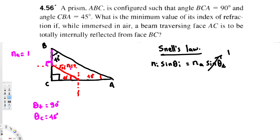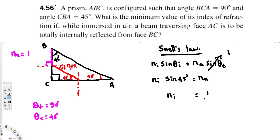Since sin(90°) = 1, that term drops out. The incident angle is 45 degrees, so: n_i × sin(45°) = n_a × 1. Bringing terms across: n_i = n_a / sin(45°) = 1 / (1/√2) = √2. So the index of refraction of the prism is √2, which equals approximately 1.41. That's our final answer. I hope you find this video helpful — see you next time!